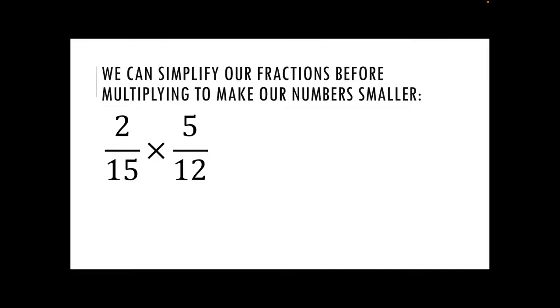When we are simplifying though, we cross simplify. So we need to look diagonally. In this case, I am looking at two and twelve. They are both in my two times table. So I can simplify them down to one and six because I've divided by two. And then on the opposite diagonal, five and fifteen are both in my five times table. So when I divide by five, I'm going to get one on the top and three on the bottom there.